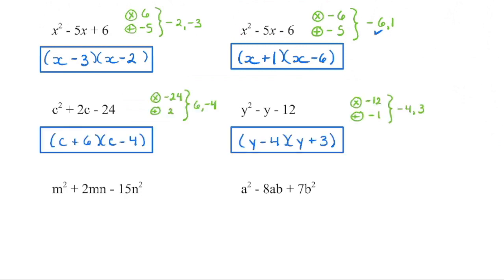So in each of these cases, we're looking for two numbers that multiply to get that c value and add to get that b value. Once you get those two numbers, if and only if the leading coefficient in front of that squared term is a 1, you can see the pattern — we're taking these numbers and they essentially are the values that go into the brackets.